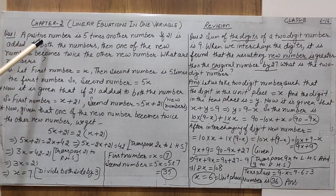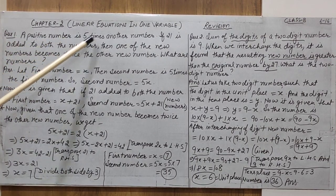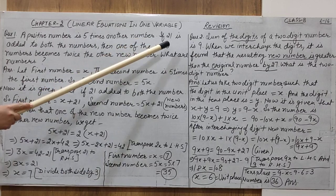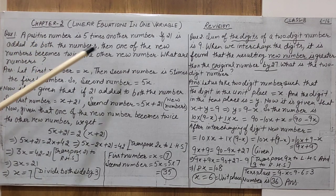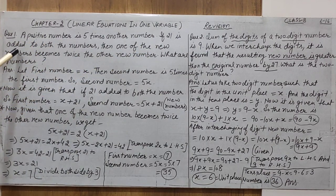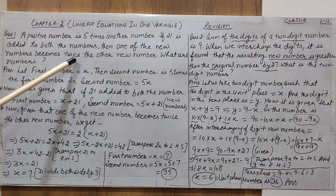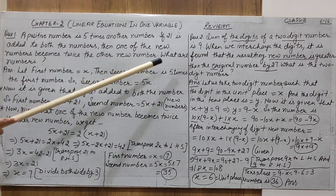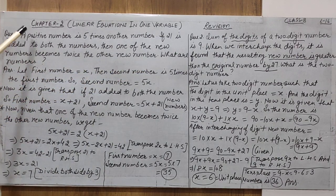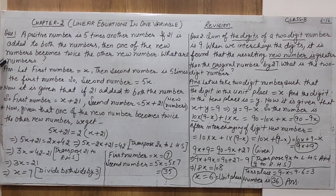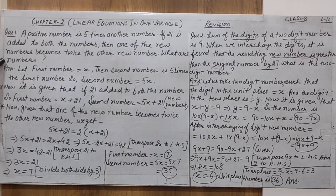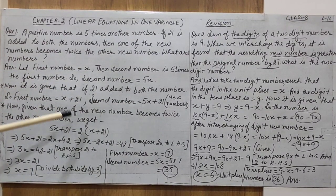Question 1 is: a positive number is 5 times another number. If 21 is added to both the numbers, then one of the new numbers becomes twice the other new number. What are the numbers? Using the given conditions step by step, you have to perform the solution.